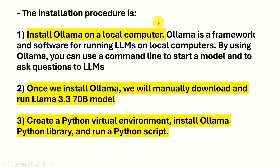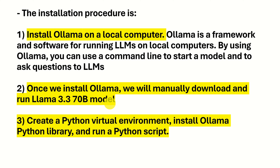The installation procedure is: first, we will install Ollama, a framework and software for running large language models on local computers. Using Ollama, you can use the command line to start a model and ask questions to LLMs. However, we are going to write a Python script instead. Then, in the second step, we will manually download and run the LLAMA 3.3 70B model. Finally, we will create a Python virtual environment, install the Ollama Python library, and run the LLAMA 3.3 model using that library.